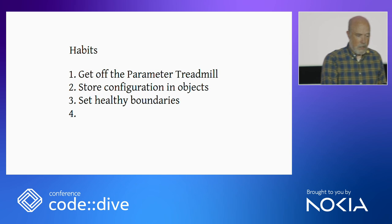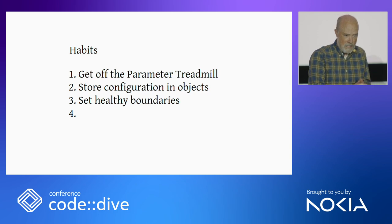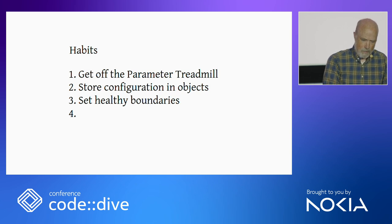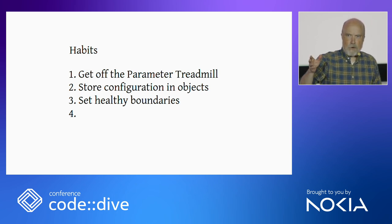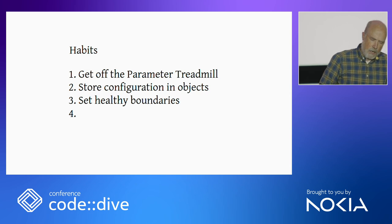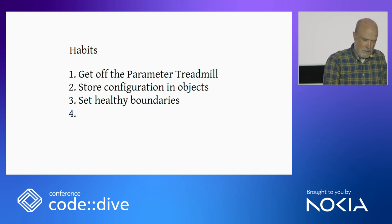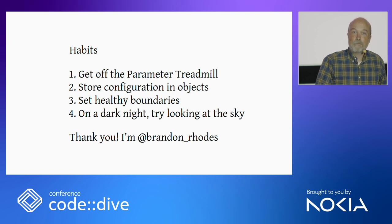I hope you found the details about astronomy interesting, but your immediate takeaways are going to be these three habits I learned while maintaining a library: get off the parameter treadmill when you have the chance; store configuration in objects, don't think it always has to be stored and hidden globally; set healthy boundaries and get out of the way as soon as you can. And finally, if you're ever outside the city and it's dark and there aren't clouds and you look up — maybe grab a telescope or a pair of binoculars and on a dark night, try looking at the sky. Thank you very much.